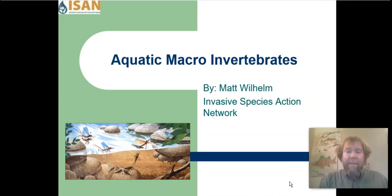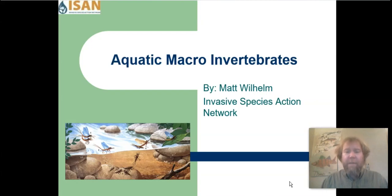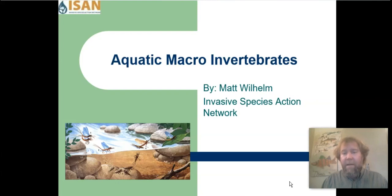Aquatic means they live underwater. Macro means that these organisms are large enough to be seen with the naked eye. Invertebrate means that they do not have a backbone. All of the organisms we're going to be talking about today are insects, but please keep in mind that aquatic macroinvertebrates can also be crustaceans, clams, snails, worms, and many other things.